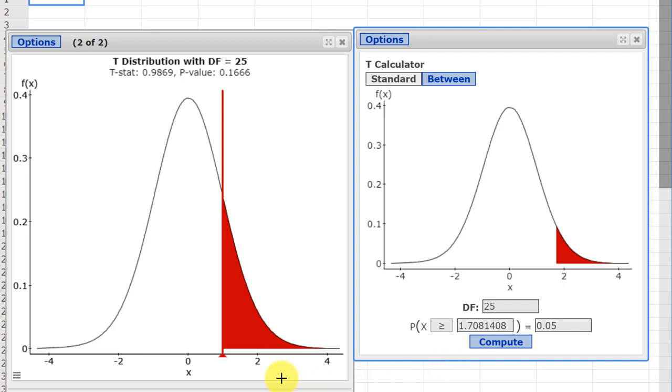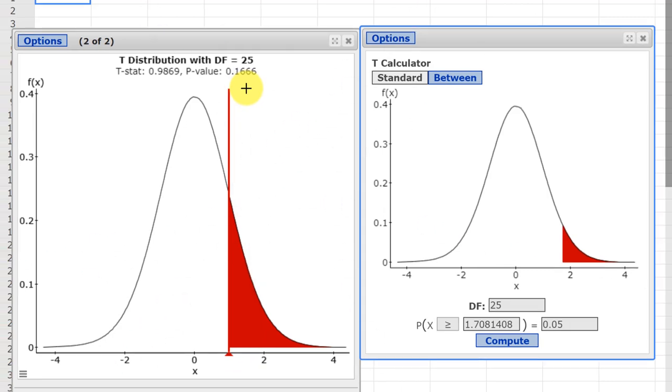And if we look over here, if we find 1.71, it's somewhere in there, so that agrees that the test value is not in the rejection region, and again, that explains why the p-value is not less than alpha.